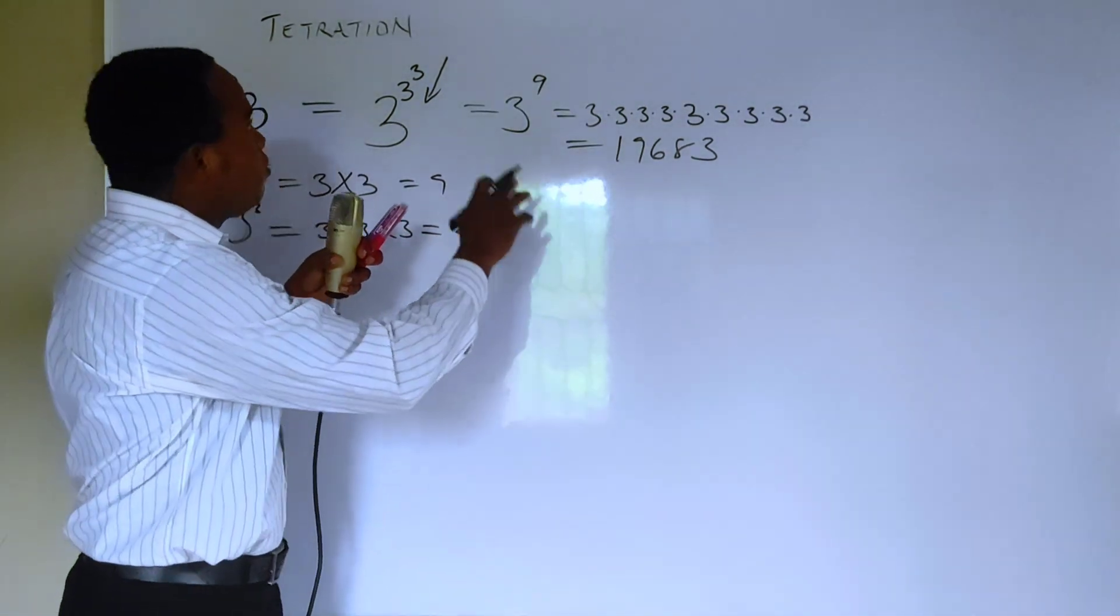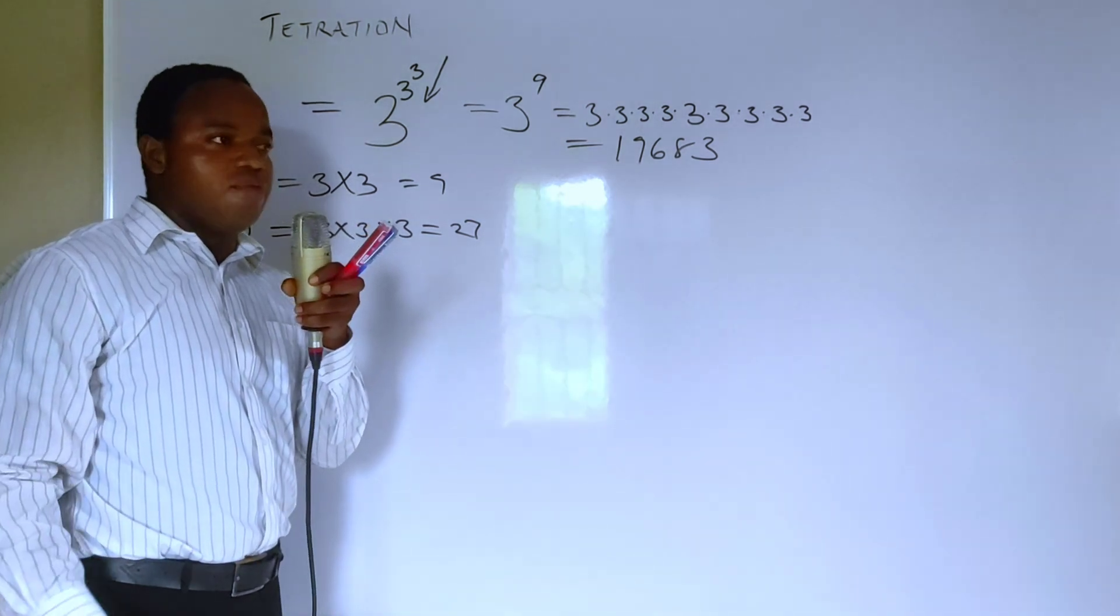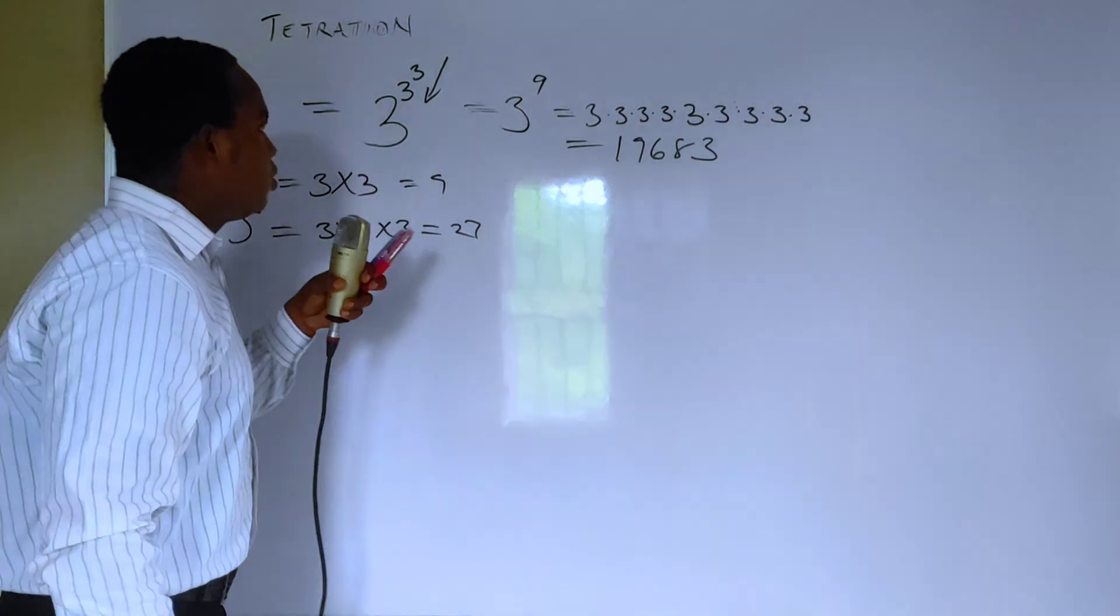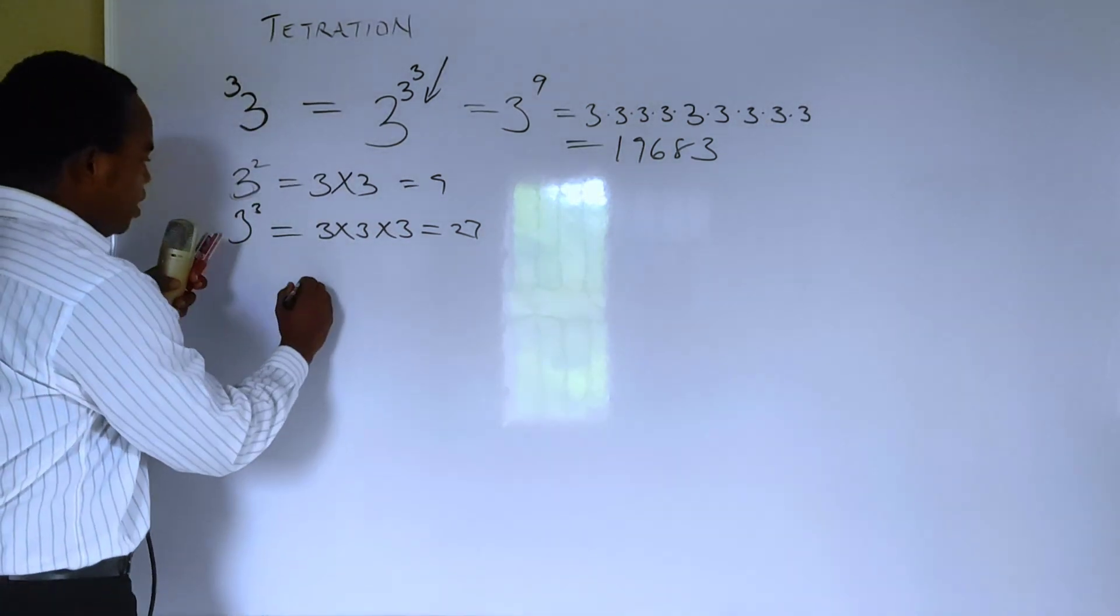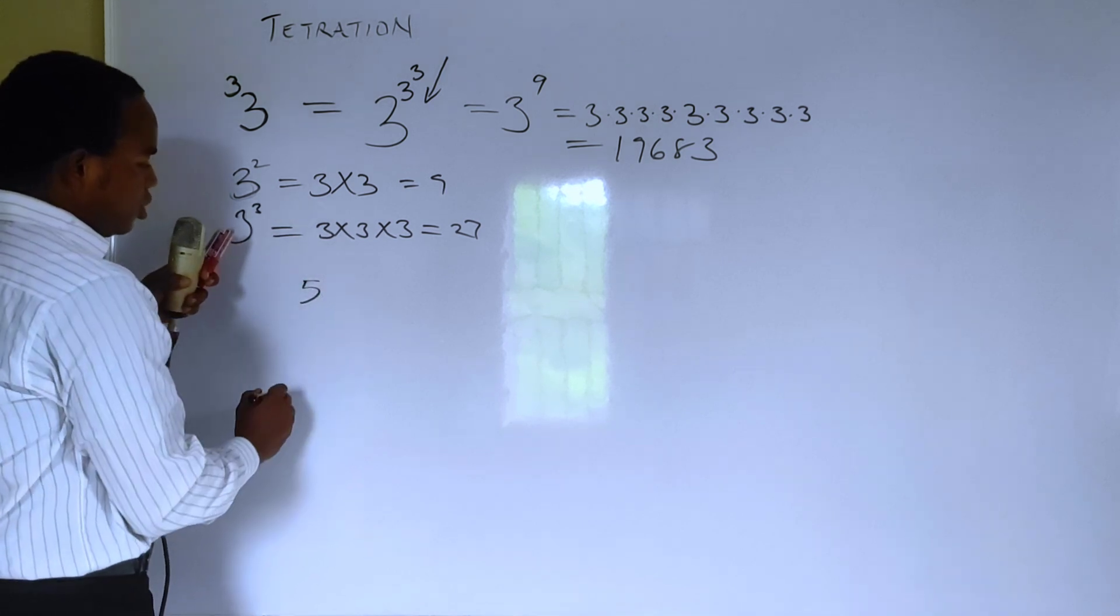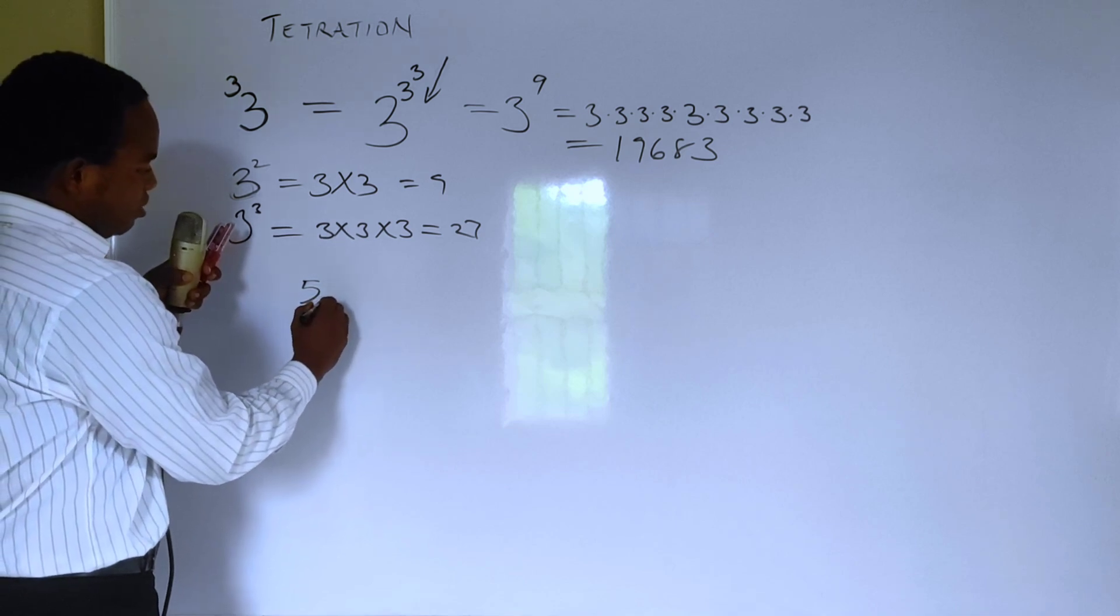And this is the more reason why tetration doesn't get used a lot in mathematics, because the numbers get pretty big very quickly. So look at it being the fifth iteration of a number, like let's say the fifth iteration of 3 for example.